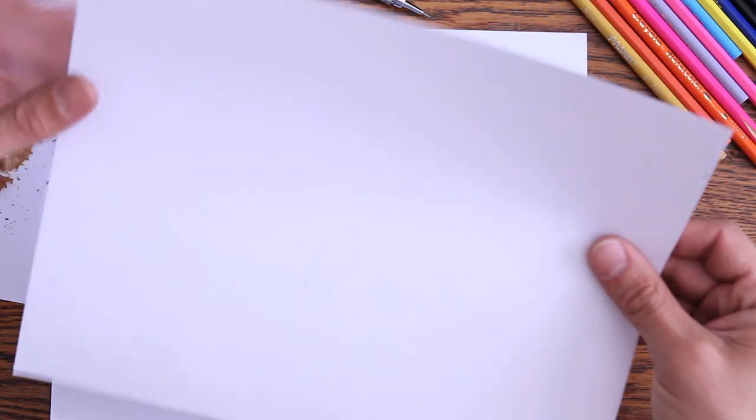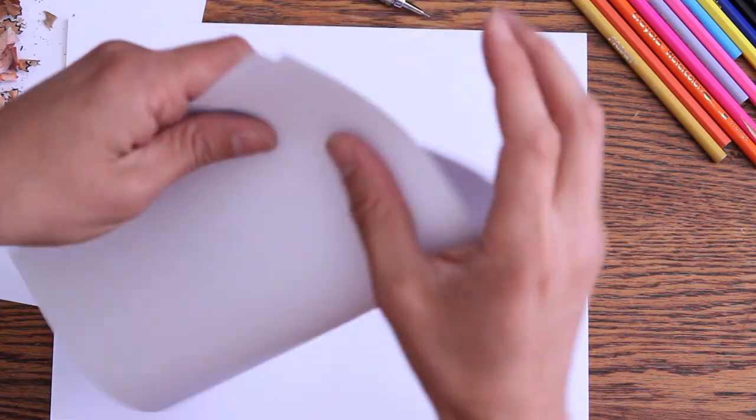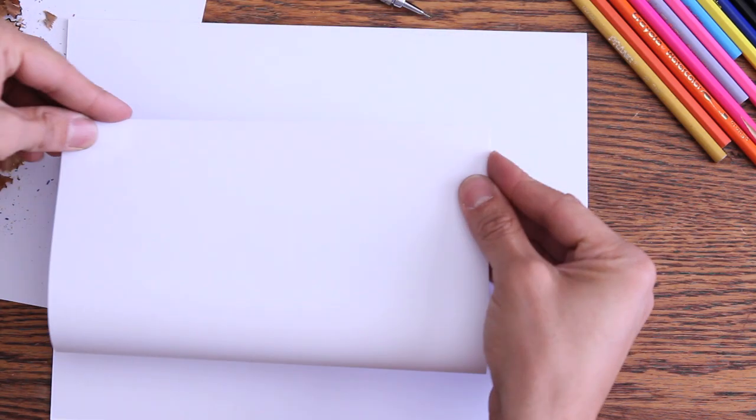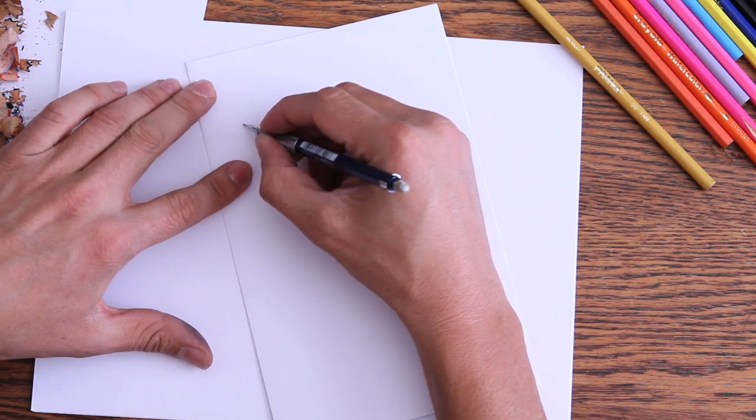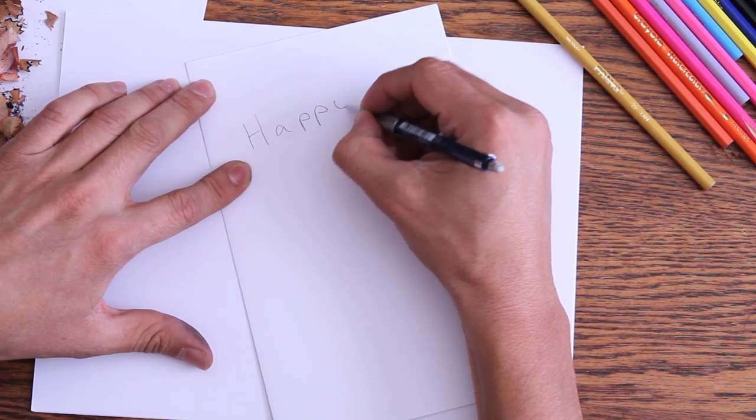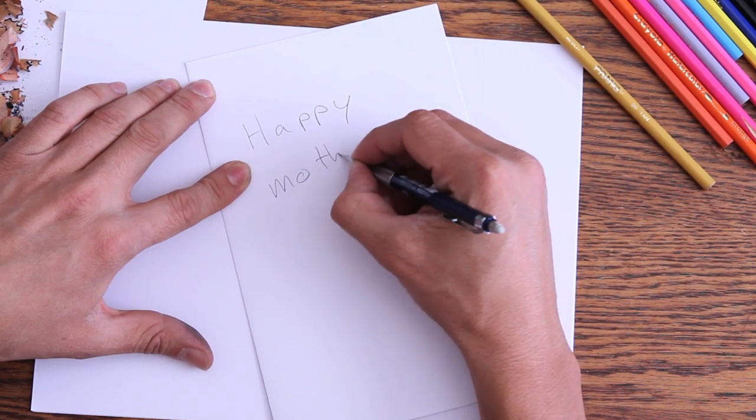The first thing you want to do when you make the card is fold the paper in half. Your mom will be super impressed that you can actually do this. Now that you've got the card folded in half, what you want to do is write a good message on the card. I suggest something along the theme of Happy Mother's Day.